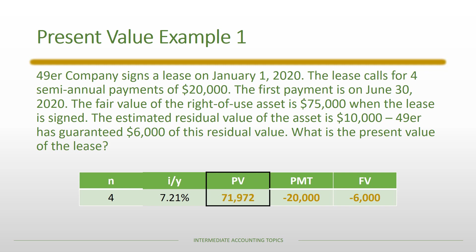When we calculate the present value we get $71,972. Using the 90% test, that is more than 90% of the fair value of the asset of $75,000, therefore this should be classified as a finance lease.